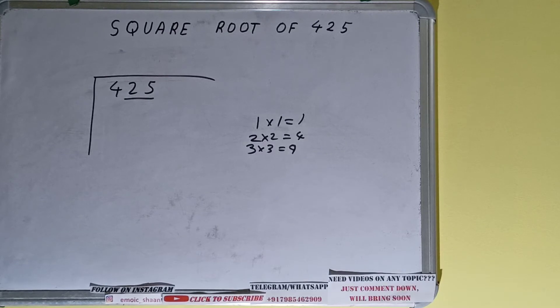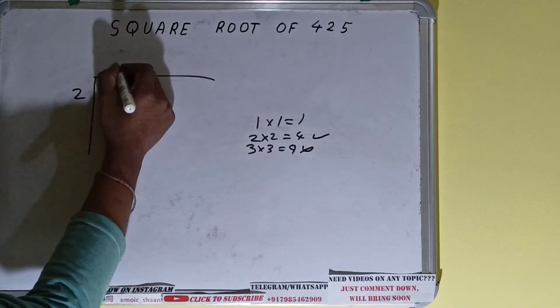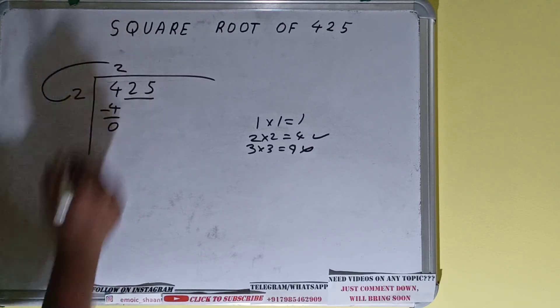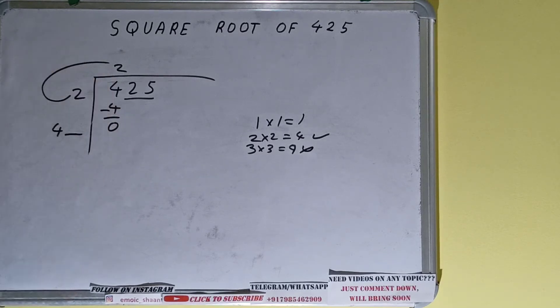So we have to go with 4. Two here and two here will give 4, subtract and zero will be left. Now we did 2 into 2, so 2 plus 2 will be 4, and keep one digit extra.